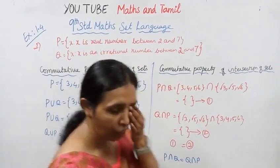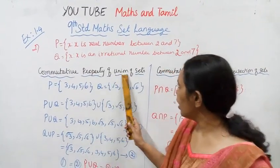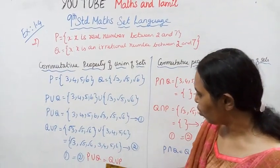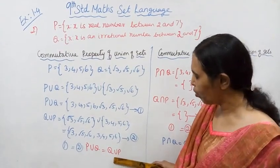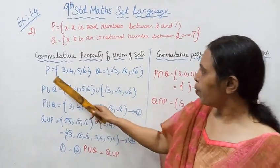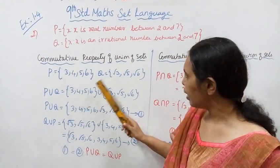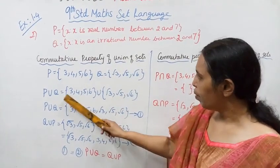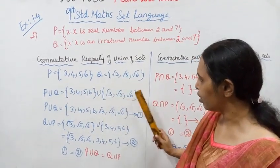Commutative property of union of sets: P union Q equals Q union P. Now computing P union Q: P is {3, 4, 5, 6} union {√3, √5, √6}.